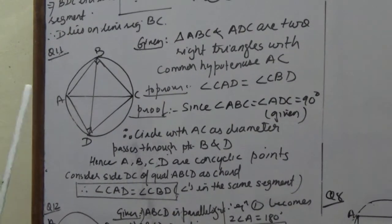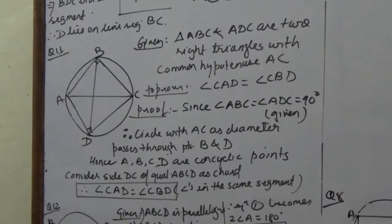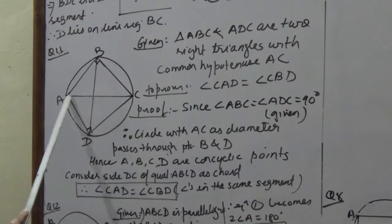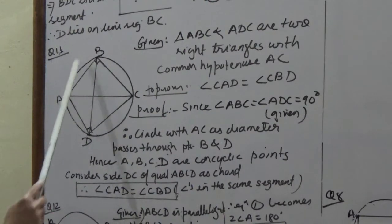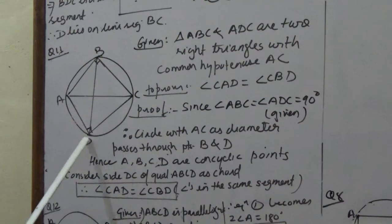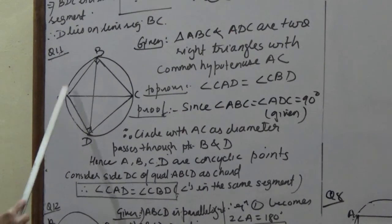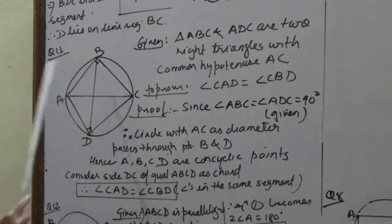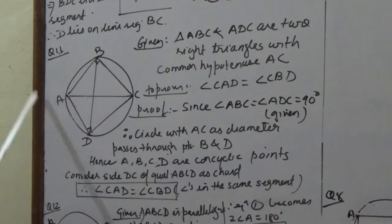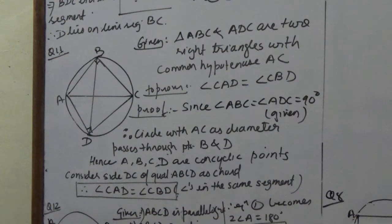In question 11, it is given that triangles ABC and ADC are two right triangles with common hypotenuse AC. We have to prove that angle CAD equals angle CBD. It is not directly given that ABCD lie on a circle, so first we must prove that all four points are concyclic.